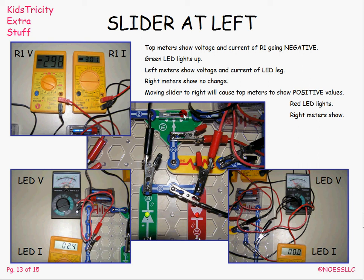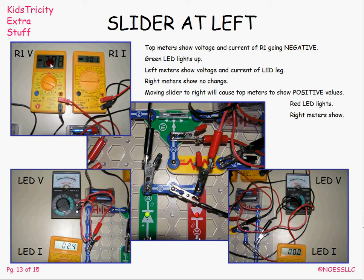When I move the slider over to the right, I end up with current flow in the other leg, which turns on the red LED — the green one goes off. This meter swings over indicating the voltage drop across the red LED, and the readings go back to zero on the green side. Only when it's reversed do you get the negative reading. So as I move this back and forth, the LEDs blink back and forth — on, off, on, off — and the meters swing around, showing current going up and down.